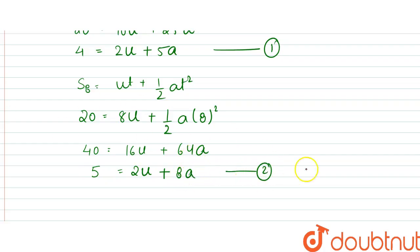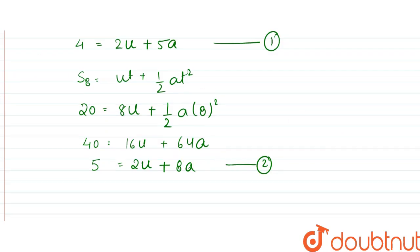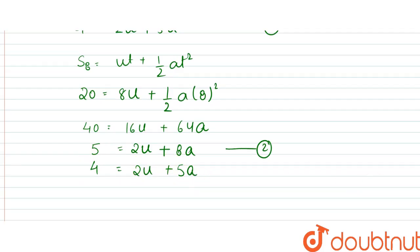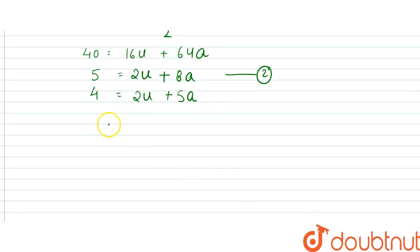Now from both these equations we will find out. So 4 is equal to 2u plus 5a. When we subtract this, 1 equals 3a. So acceleration is equal to 1 by 3 meter per second square.